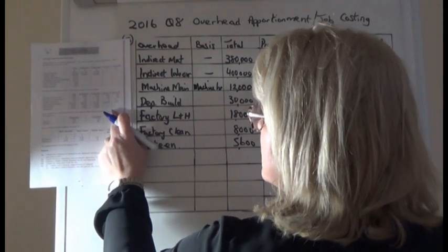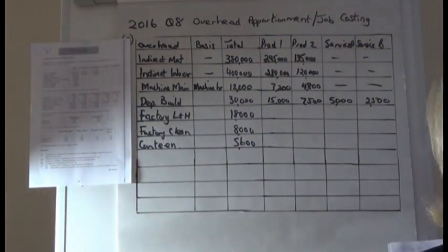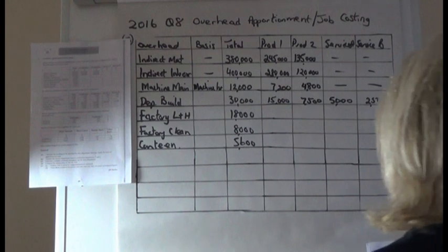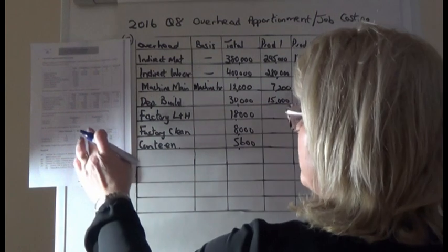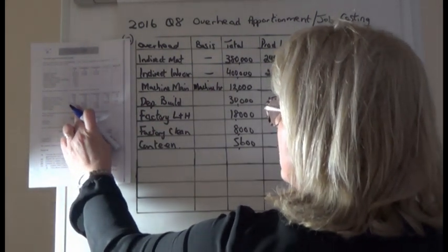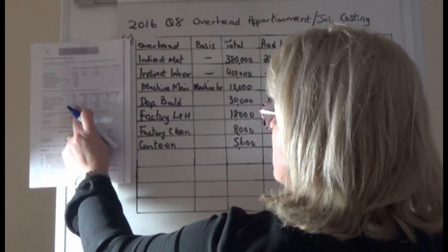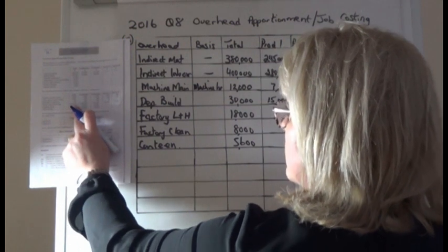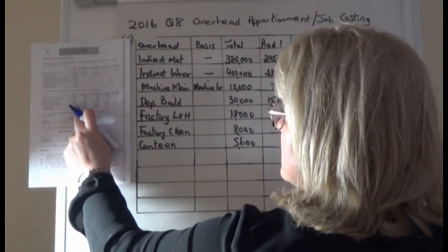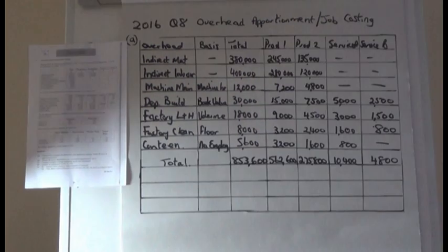The depreciation of buildings is divided on the basis of book value. The book value of buildings is 600,000 in total, with 300,000 of that in Production 1.